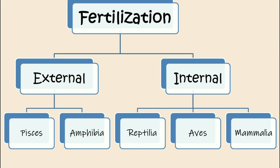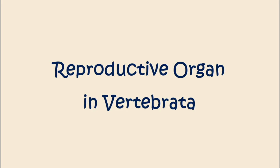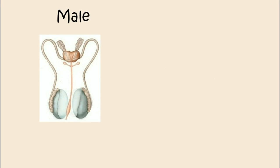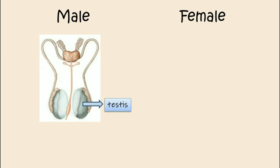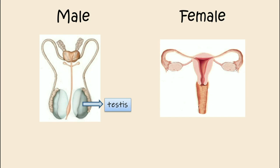Let's talk about reproductive organs in vertebrates. Male animals have a gonad called the testis. The gonad in female animals is called the ovary.